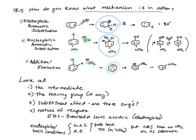In summary, you want to look at the intermediate you're going to form. You know which intermediate you're going to form if you identify whether you've got a leaving group, a substituent effect like electron withdrawing groups, and the nature of your reagents. The nature of reagents will clue you into electrophilic aromatic substitution containing Bronsted or Lewis acids. Nucleophilic or basic conditions lead you to nucleophilic aromatic substitution or addition-elimination chemistry. Which one happens depends on whether you've got that electron withdrawing nitro group or not.